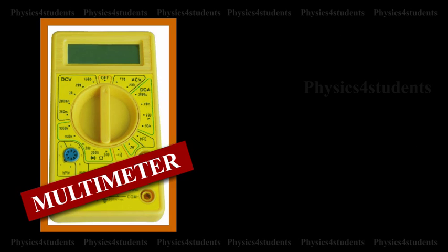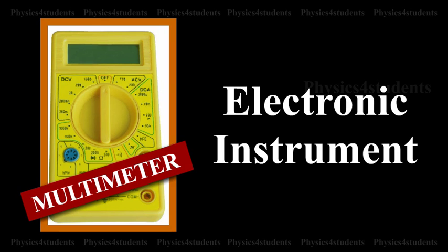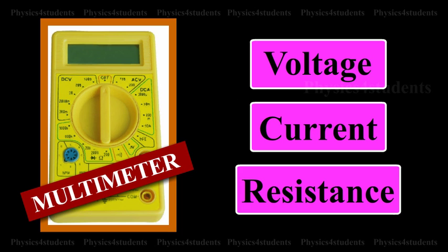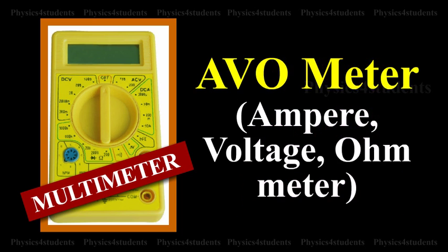Multimeter. Multimeter is an electronic instrument which is used to measure voltage, current and resistance. This is called as AVO meter, i.e. ampere voltage ohmmeter.